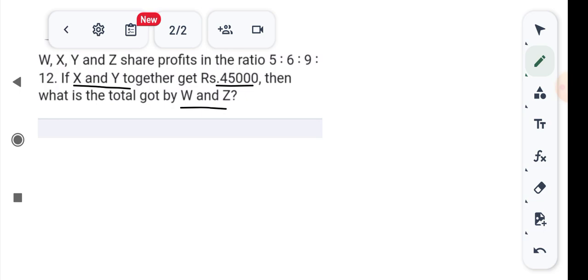Okay, so we will use the ratio. W, X, Y, Z ratio is 5:6:9:12. We'll call this 5a, 6a, 9a, and 12a.